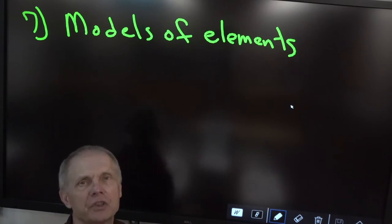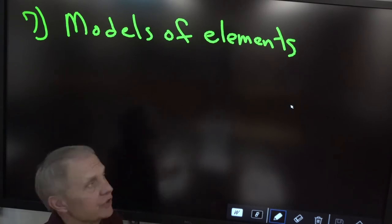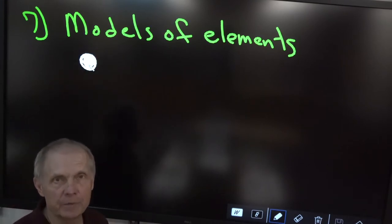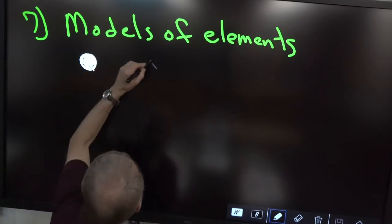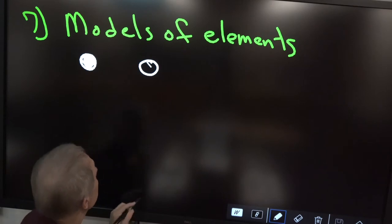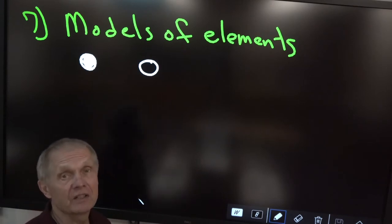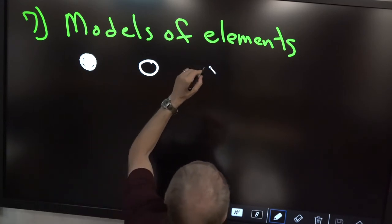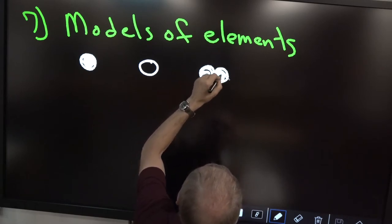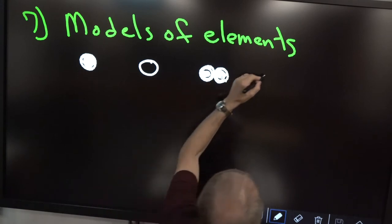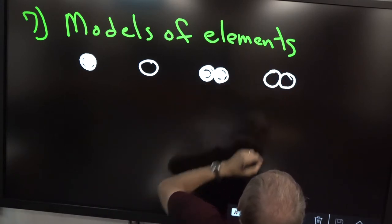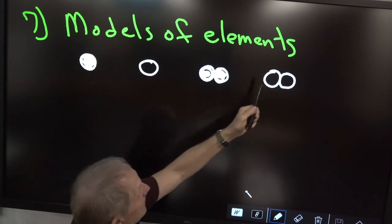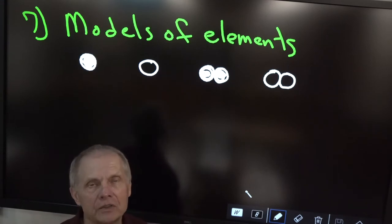There are four models we can draw for an element. The easiest one is just a filled-in circle — that could be an element. An open circle also could be an element. Since diatomic gases are elements, two other models of elements could be two closed circles or two open circles. Those are the four models of elements.